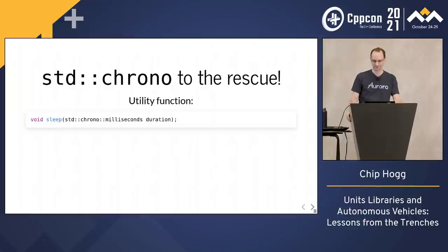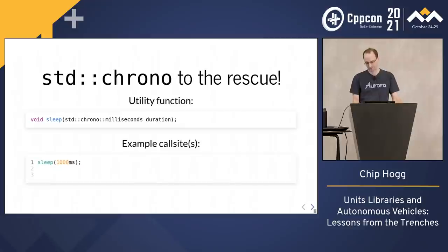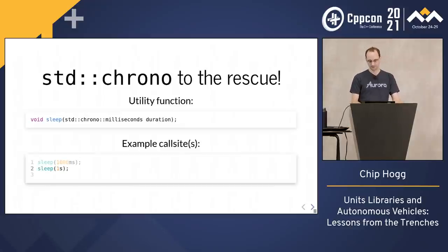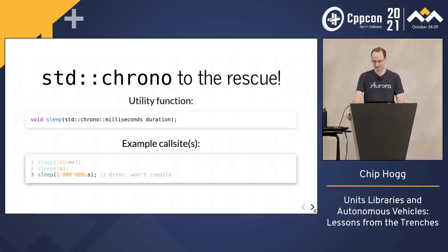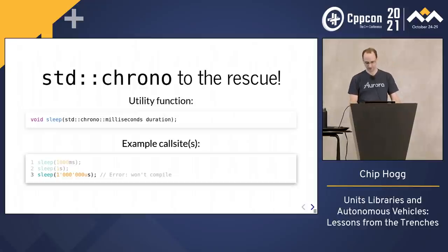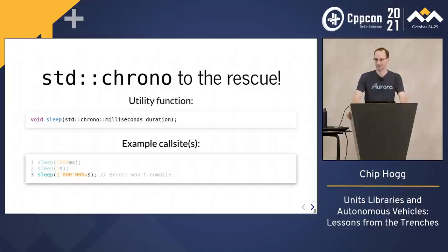Here's what we would do now. We'd use std chrono types in our interfaces. For one thing, the call sites are now perfectly clear — we can see the units directly. For another, they're more flexible; we can pass something like one second and we'll automatically get a correct conversion. And finally, they're safe. If we pass something like one million microseconds, it won't compile, because microseconds to milliseconds is a lossy conversion. A decade ago, the Chrono library taught us that we can have nice things, and now we all refuse to settle for anything less — unless we're dealing with any dimension other than time.